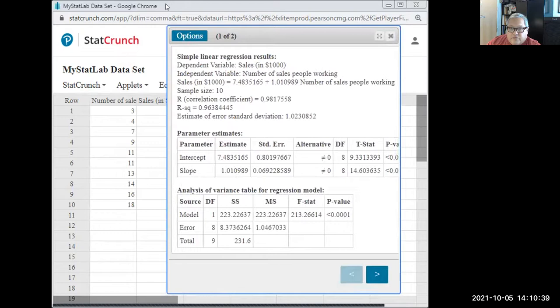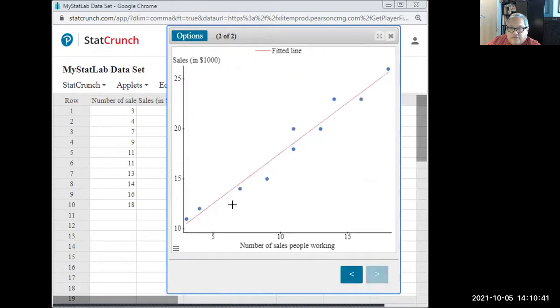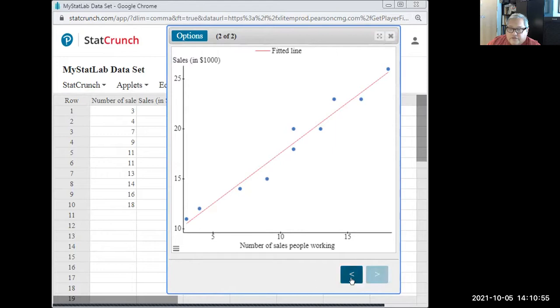After that, we have on the second page of the output, the regression line with the data shown. Notice how the data conform to a very strong linear positive form, direct relationship between how many salespeople are working and how much in sales revenue the company earns.